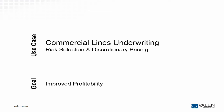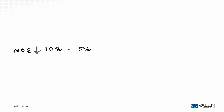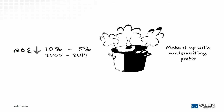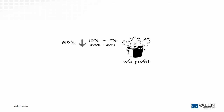According to the Insurance Information Institute, return on equity, or ROE, has gotten hammered and isn't predicted to improve anytime soon. You can't impact interest rates, but you can increase underwriting profit. But it can feel like a pressure cooker, because achieving profitable underwriting is easier said than done.